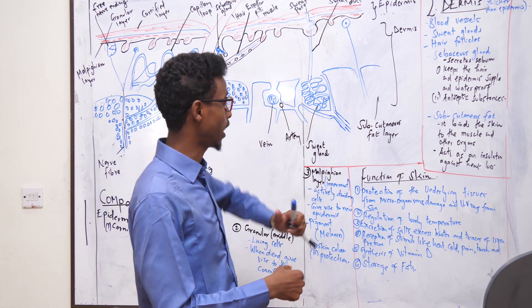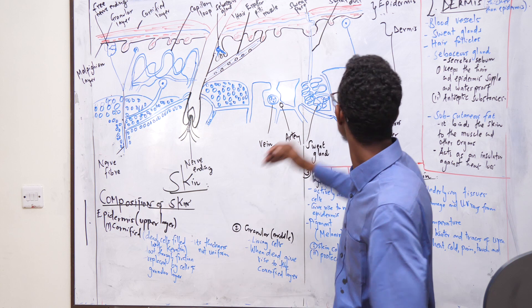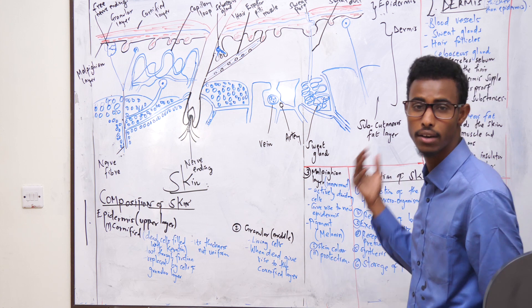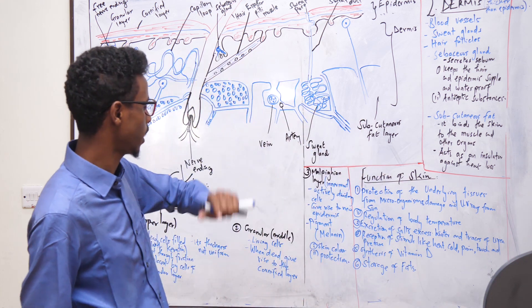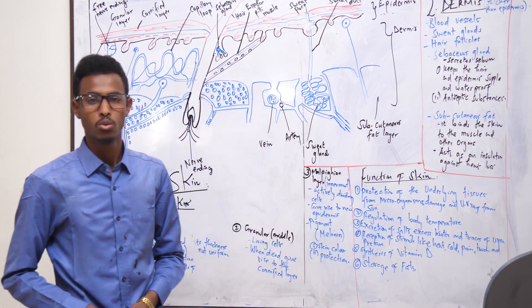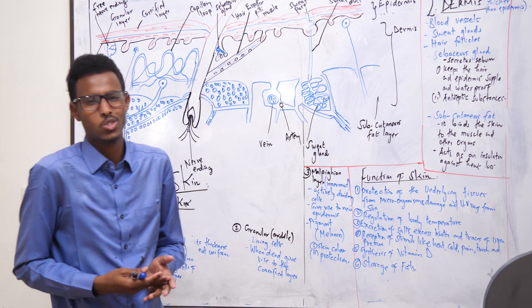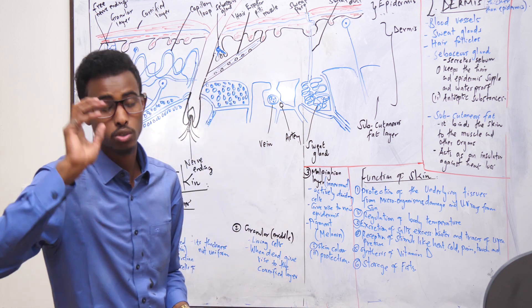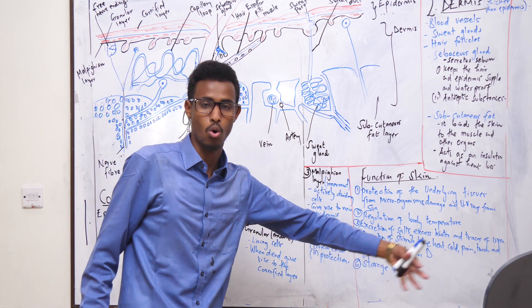Now let's go to the lower layer of the skin, the dermis. What are the compositions of the dermis? We have the blood vessels, sweat glands, hair follicles, sebaceous glands, subcutaneous fat layer, and nerve endings. What is the essential function of blood vessels in the skin? Blood vessels bring oxygen and nutrients to the tissues and cells of the skin and remove waste products such as carbon dioxide.